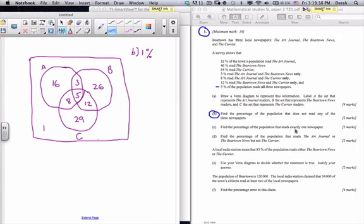Find the percent of the population that reads exactly one newspaper. These would be these ones over here: the 16, the 26, and the 29. These are the ones that read just one newspaper. 16 plus 26 plus 29, when we add that together, we get 71. So 71% read just one newspaper. That's for C.